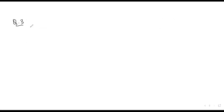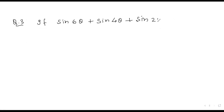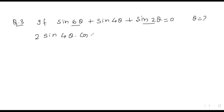Question number 3: if sin 6θ + sin 4θ + sin 2θ = 0, then what is θ? We take sin 6θ and sin 2θ together and apply the sum-to-product formula sin C + sin D. This gives sin 4θ · cos 2θ, so it becomes 2 sin 4θ cos 2θ + sin 4θ = 0.